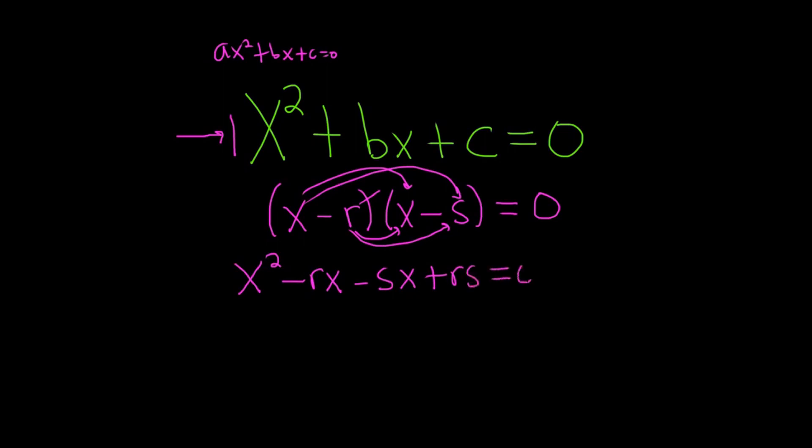Okay, almost there. So now what we can do is we can combine these terms. We can pull out a negative one and an x. We can write it like this: x squared minus (r + s), pulling out the negative one, then we have the x plus rs. We're almost done, now the cool part happens.